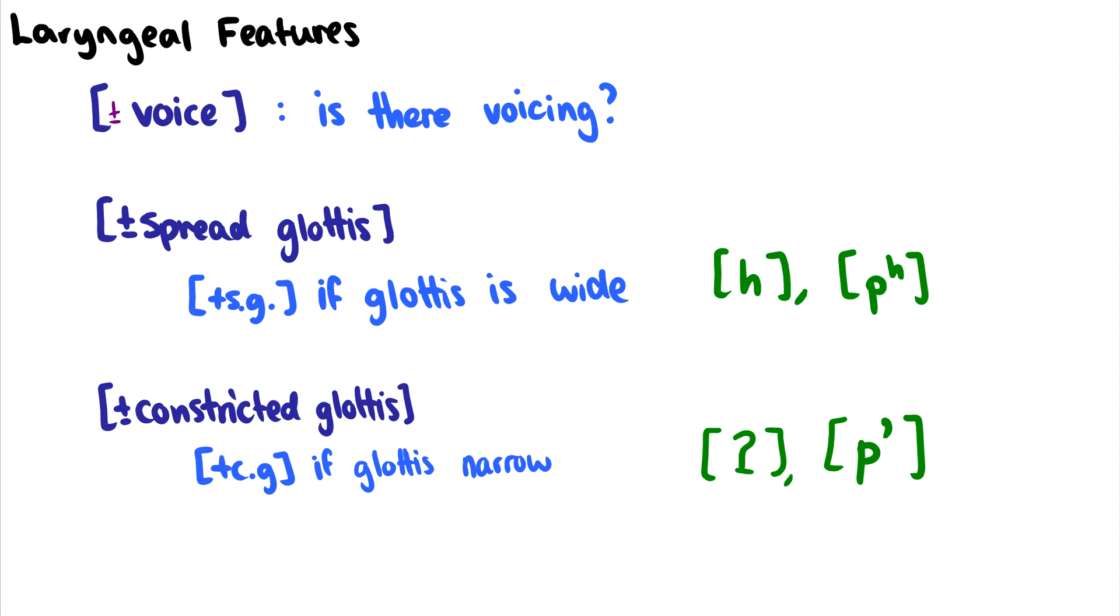The other two that might be a little bit more challenging are plus or minus spread glottis. And essentially, it is plus spread glottis if the glottis is wide. So it is very open. And when we have aspirated sound h or our glottis also spreads. So plus SG is a great way to get at the aspirated consonants.